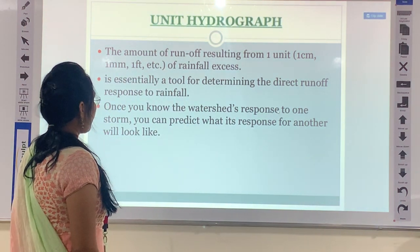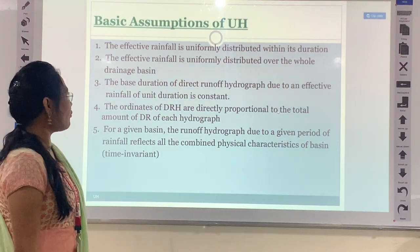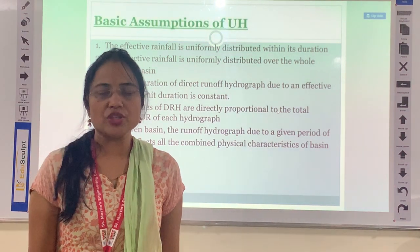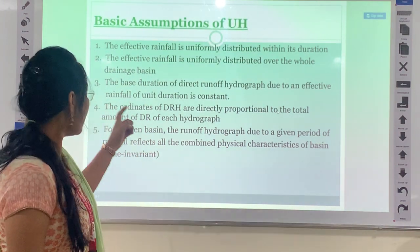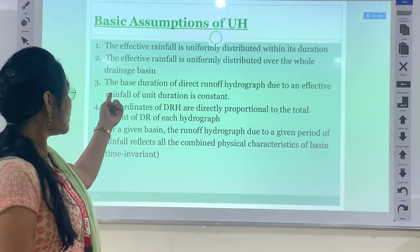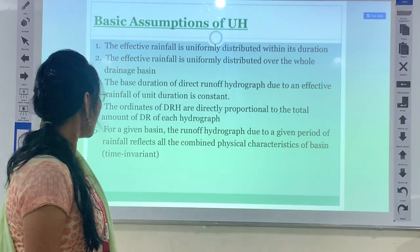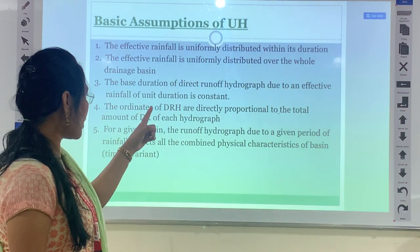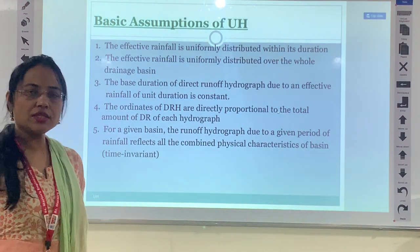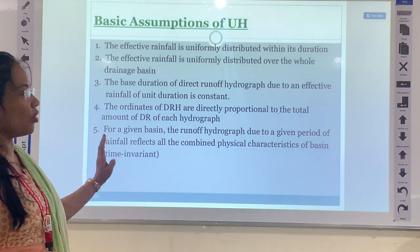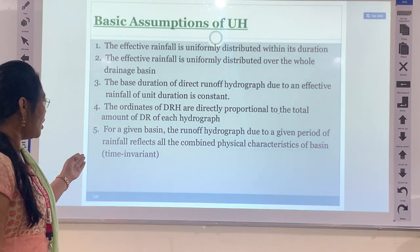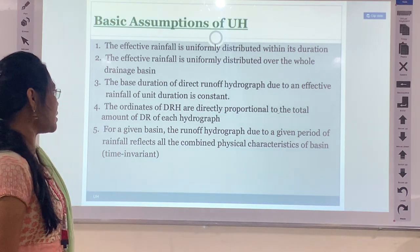The basic assumptions for the unit hydrograph are: first, effective rainfall is uniformly distributed within its duration — for any storm occurring over a duration x, the effective rainfall is uniformly distributed in that duration. Second, effective rainfall is uniformly distributed over the entire drainage basin. Third, the base duration of the direct runoff hydrograph due to an effective rainfall of unit duration is constant. Fourth, the ordinates of the direct runoff hydrograph (DRH) are proportional to the total amount of direct runoff produced. Fifth, for a given basin, the runoff hydrograph due to a given period of rainfall reflects all the combined physical characteristics of the basin.